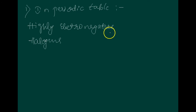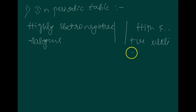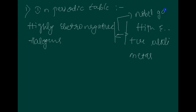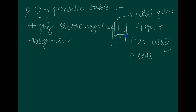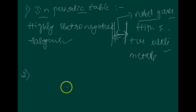In the periodic table, highly electronegative halogens and highly electropositive alkali metals — the alkali metals — are separated by noble gases. The next fact is the formation of negative ions from halogen atoms and positive ions from alkali metal atoms.